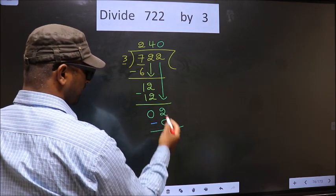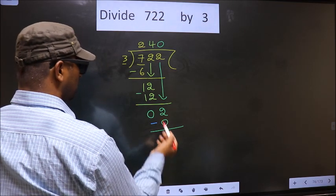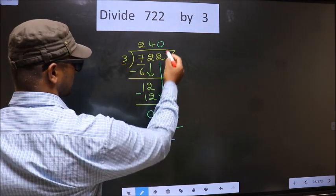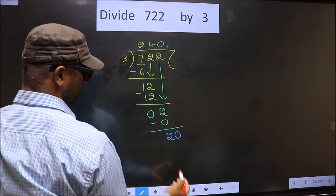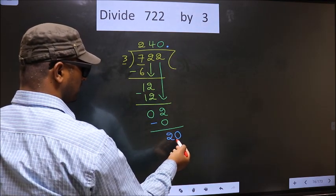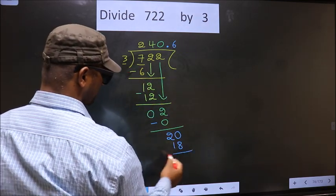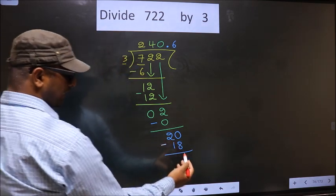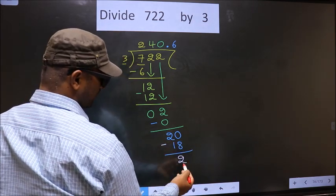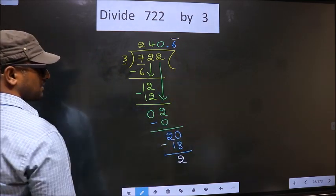Over here we did not bring any number down, and 2 is smaller than 3. So now you can put a dot and take 0 here. So 20. A number close to 20 in 3 table is 3, 6, 18. Now you subtract. 20 minus 18 is 2. We again got 2. That means we get bar on 6.